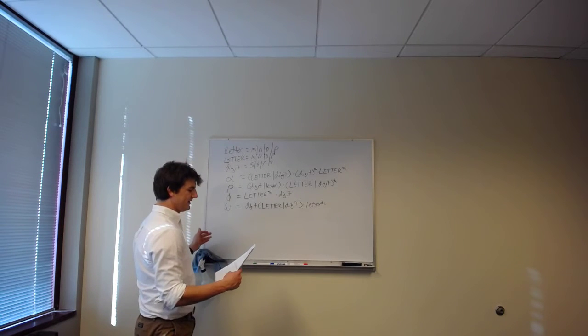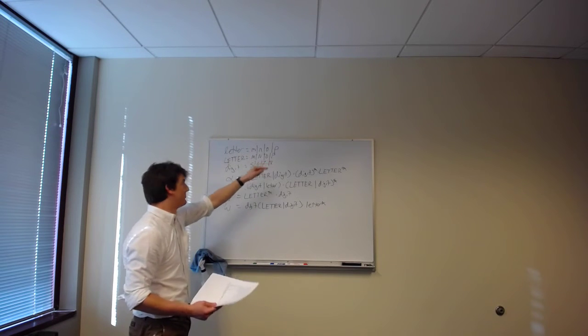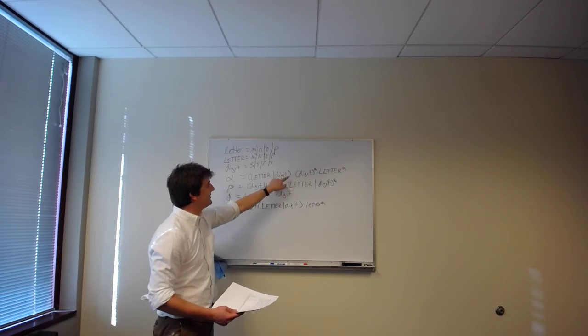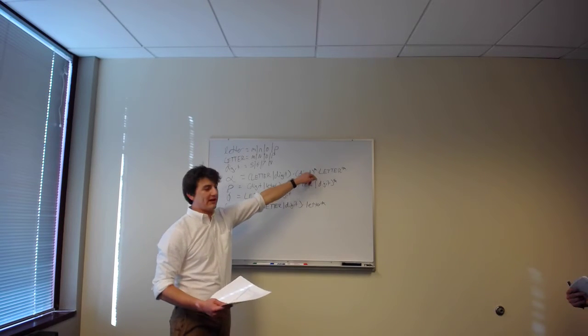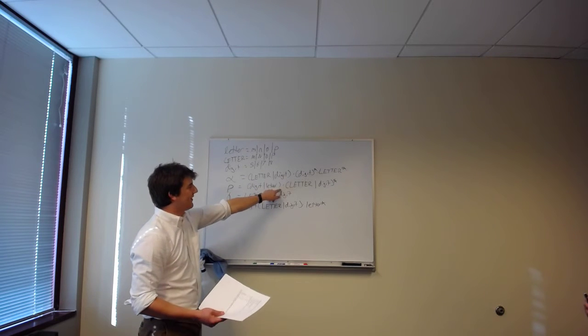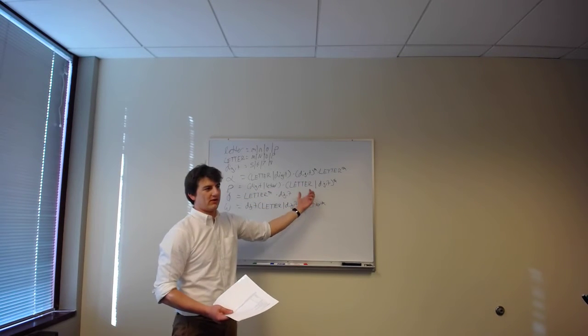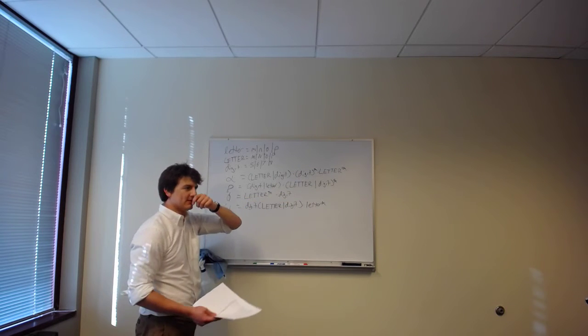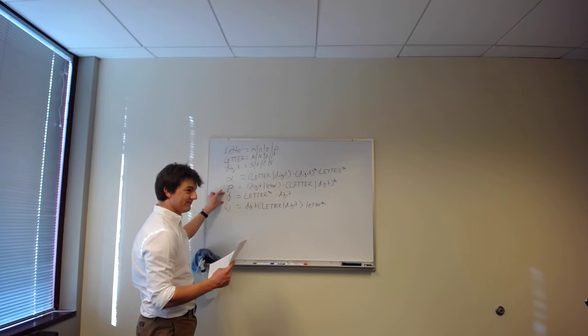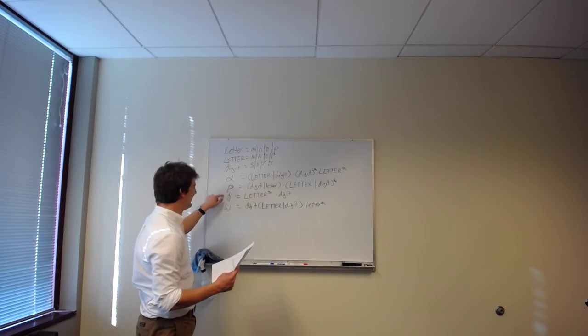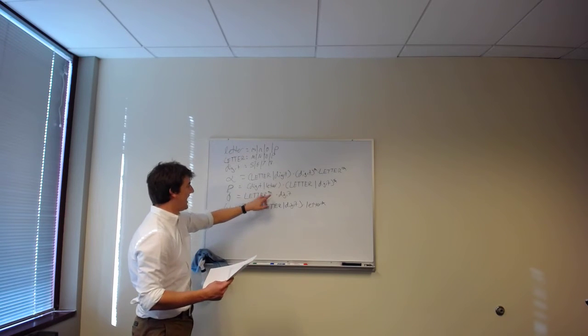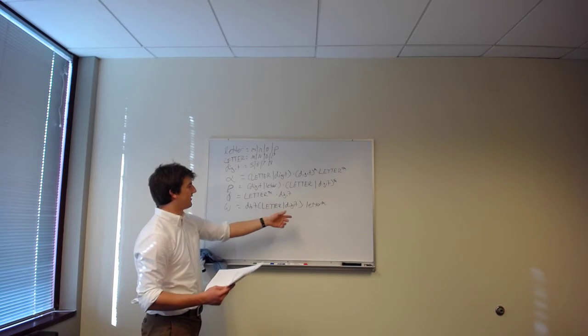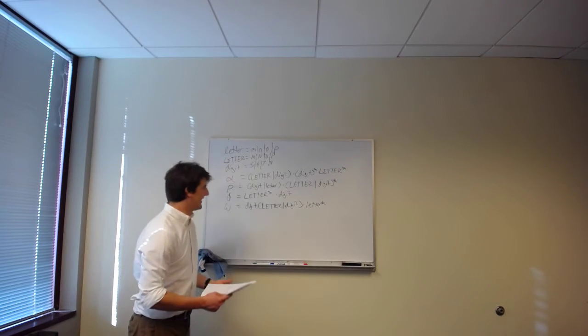So we have a series of regular expressions. We have letter is the letters lowercase m through p. We have capital letters, capital m through p, digit is 5, 6, 7, or 8. We have alpha, which is either a letter or a digit, followed by 0 or more digits, followed by 0 or more letters. Rho is a digit or a letter, followed by a letter or digit, followed by 0 or more letters or digits, right? This is going to start with either a lowercase letter or a digit, and be followed by any number of uppercase letters or digits. Phi is any number, 0 or more capital letters, followed by a digit. Omega is a digit, followed by either a capital letter or a digit, followed by any number, 0 or more lowercase letters.